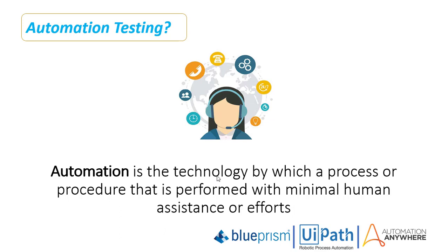Now we will see what is automation testing. Automation testing is a software testing technique to test and compare the actual outcome with the expected outcome. This can be achieved by writing test scripts or using any automation testing tool. Test automation is used to automate repetitive tasks and other testing tasks which are difficult to perform manually.